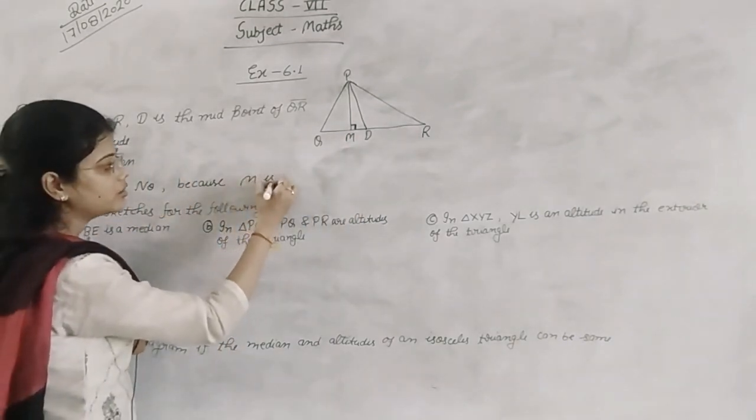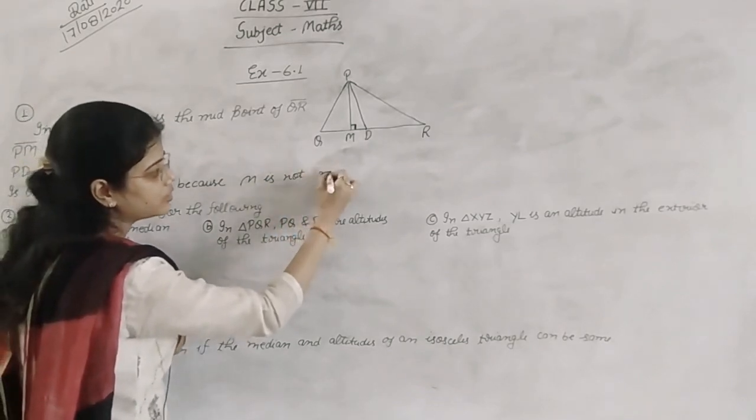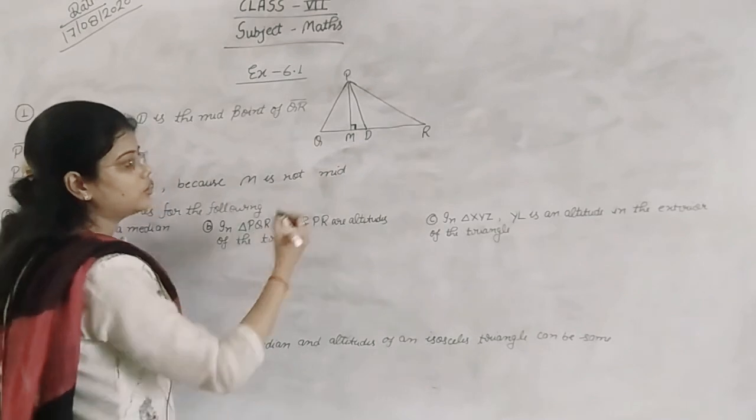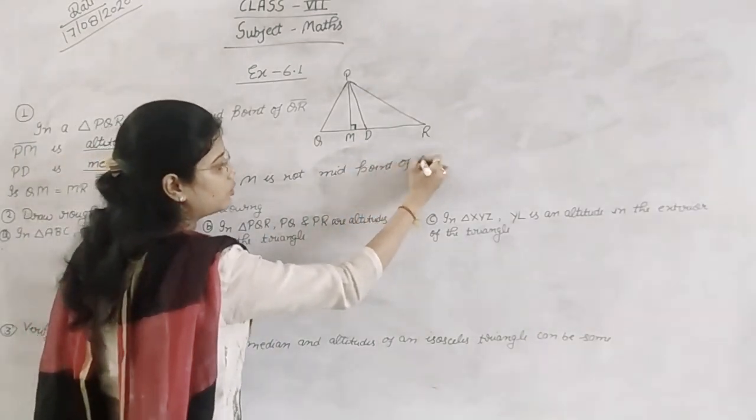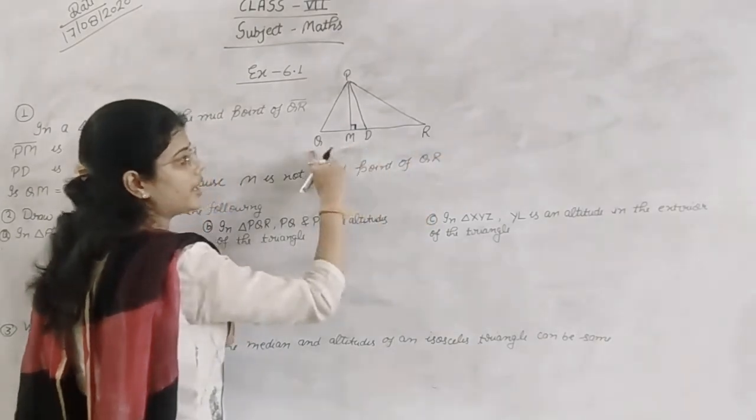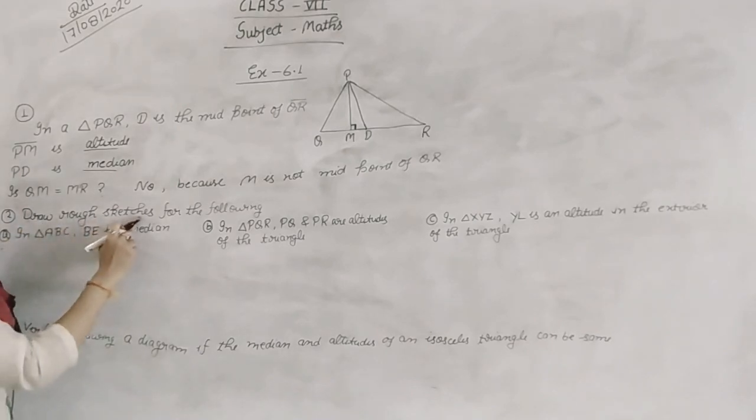Because M is non-midpoint of QR. M is non-midpoint of QR. The first thing you have said is QR side D, QR, not that you don't have to make the help of your body.